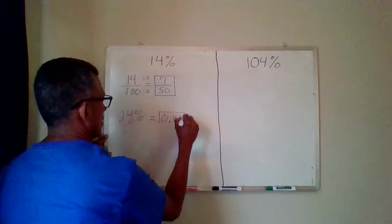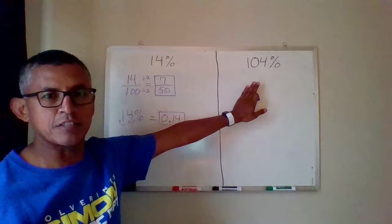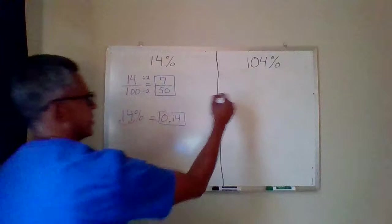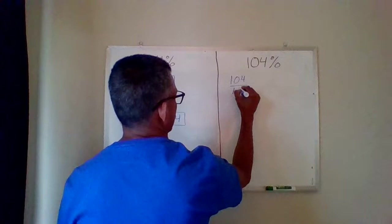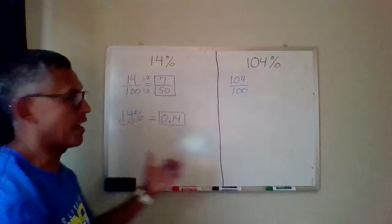We're going to look at one more, a percent that's over 100%. Same principles apply. So it's the same rule. So I would take this. This would be my numerator if I wanted to change this to a fraction. A hundred is my denominator, and once again, I can simplify.